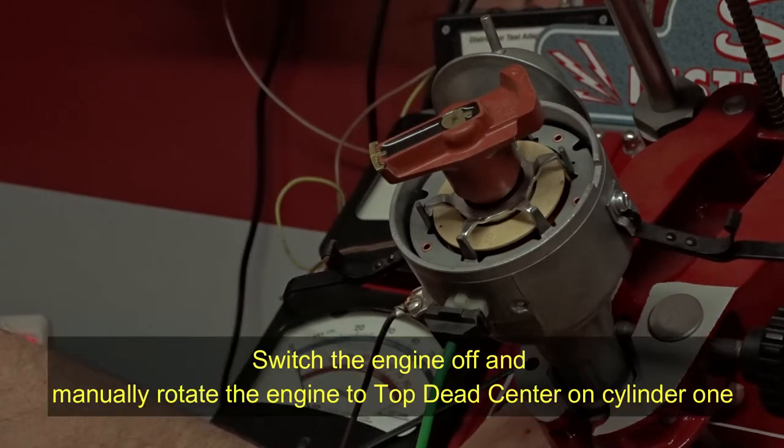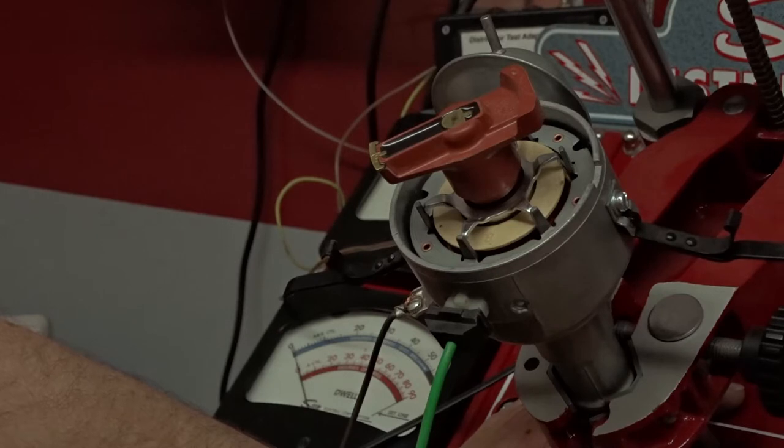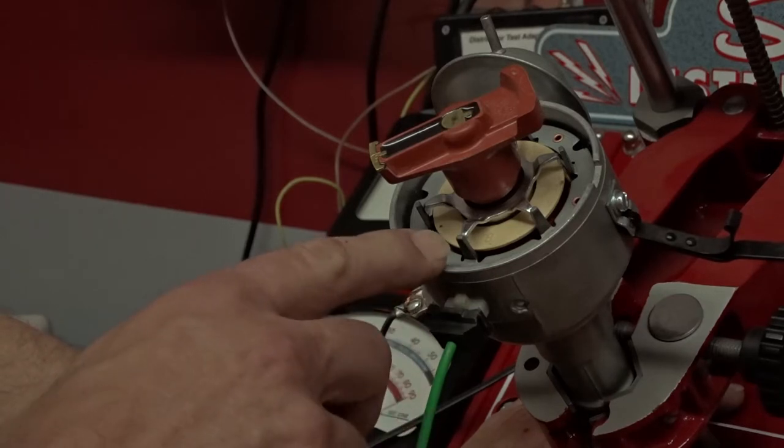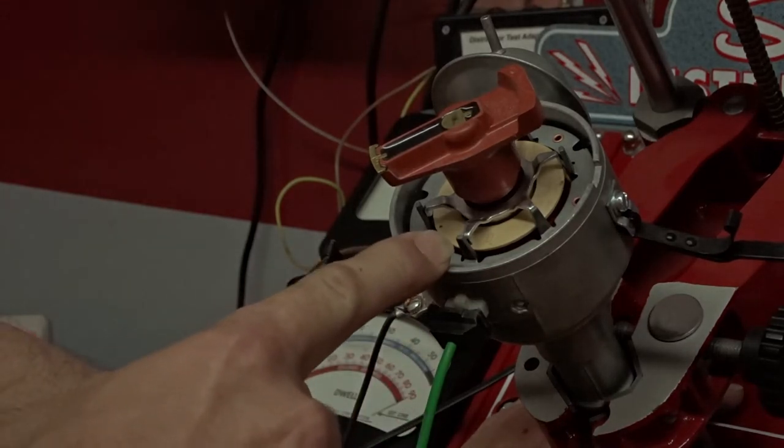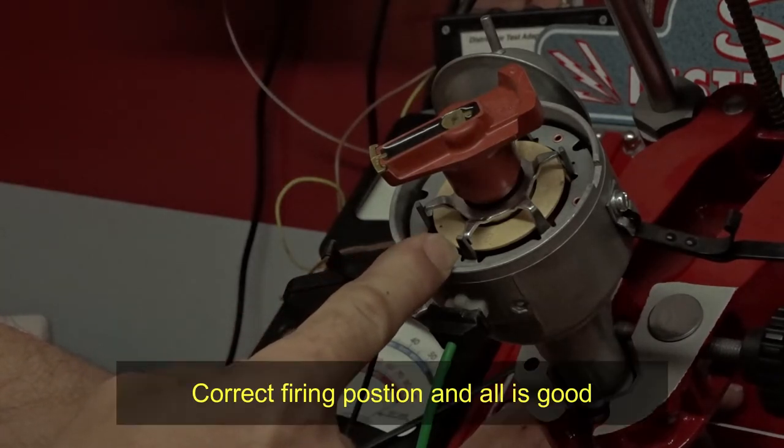Switch the engine off, and manually rotate the engine around to TDC number one, and then take the ignition distributor cap off. If the trigger circuit is wired correctly, what you will see is this. You will see the stator and the reluctor will be very close to lined up. It'll be slightly off center of the post, but it'll be very close.